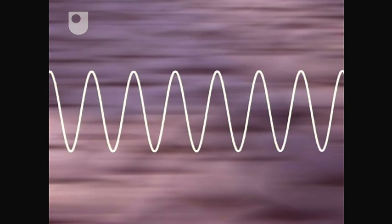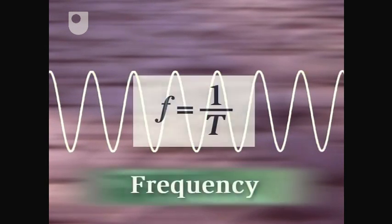The number of cycles passing any point per second is known as the frequency, and it's equal to the reciprocal of the period: f equals one over T. If the period is two seconds, the frequency must be half a cycle per second, and so on.